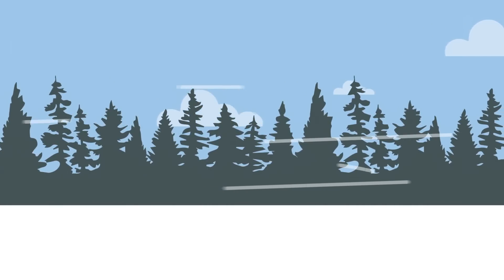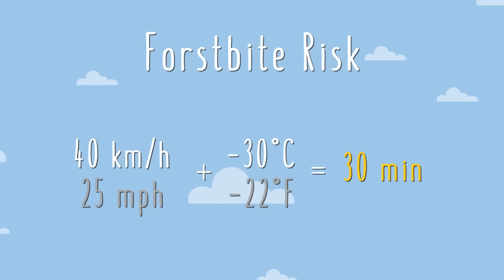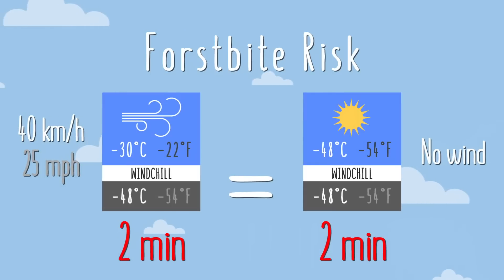And just like with our cup of hot grass tea, the wind makes these effects happen much quicker. For example, on a calm day with no breeze, if the temperature is minus 30 degrees Celsius, there is a high risk of frostbite within 30 minutes. But add a 40 km per hour wind, and it becomes a severe risk in as little as 2 minutes. That's the equivalent risk of a calm day where the temperature was minus 48.